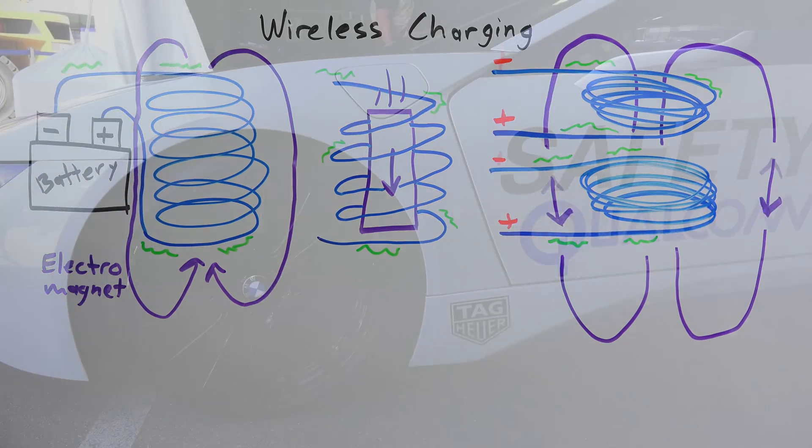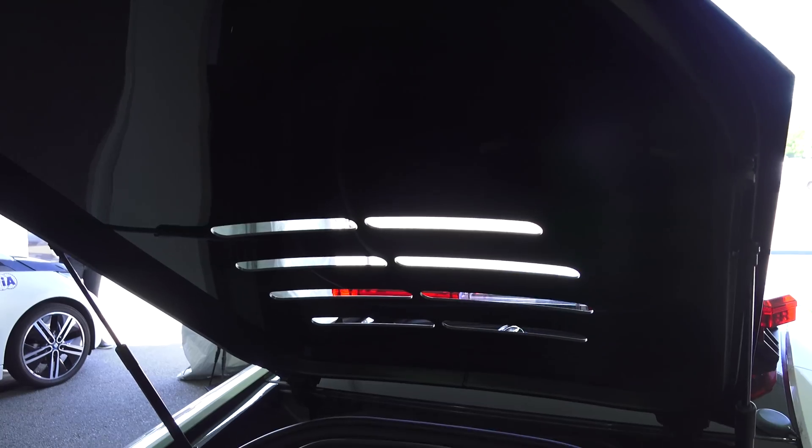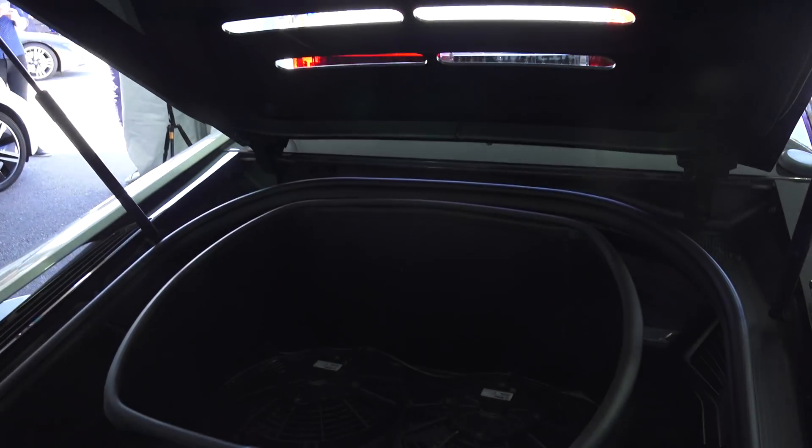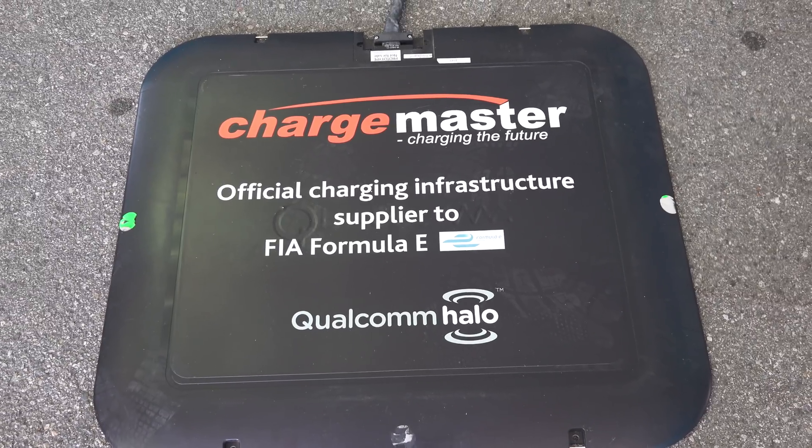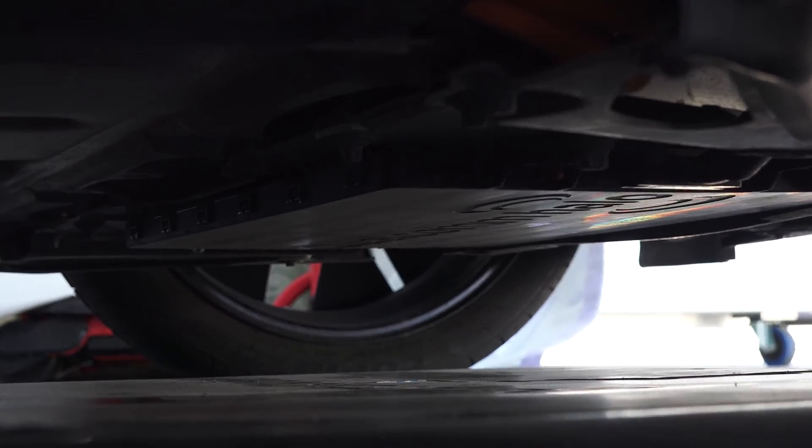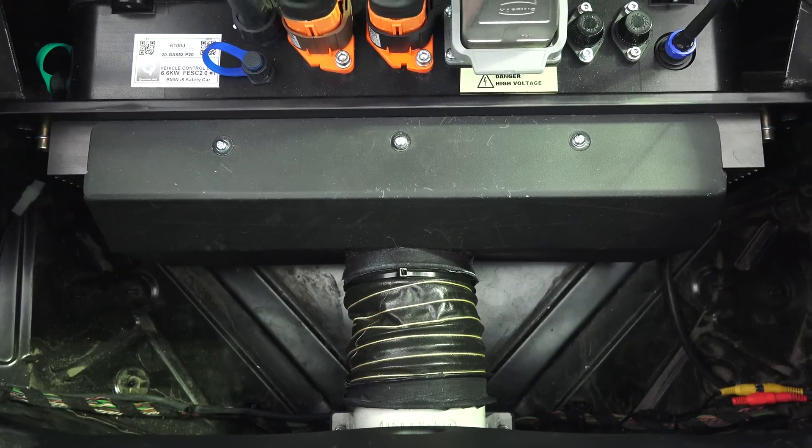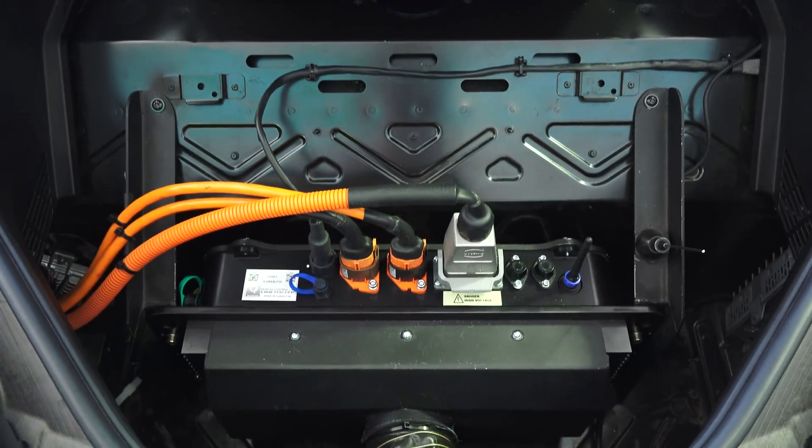This is how electric toothbrushes charge and it's also how this BMW i8 charges, just with significantly more power and a more complicated design. In this case, the technology used is the Qualcomm Halo. The Halo charging system, using a frequency of 85 kilohertz, can charge the i8 at a rate of 6.6 kilowatts, though the system is capable of even higher charging rates.